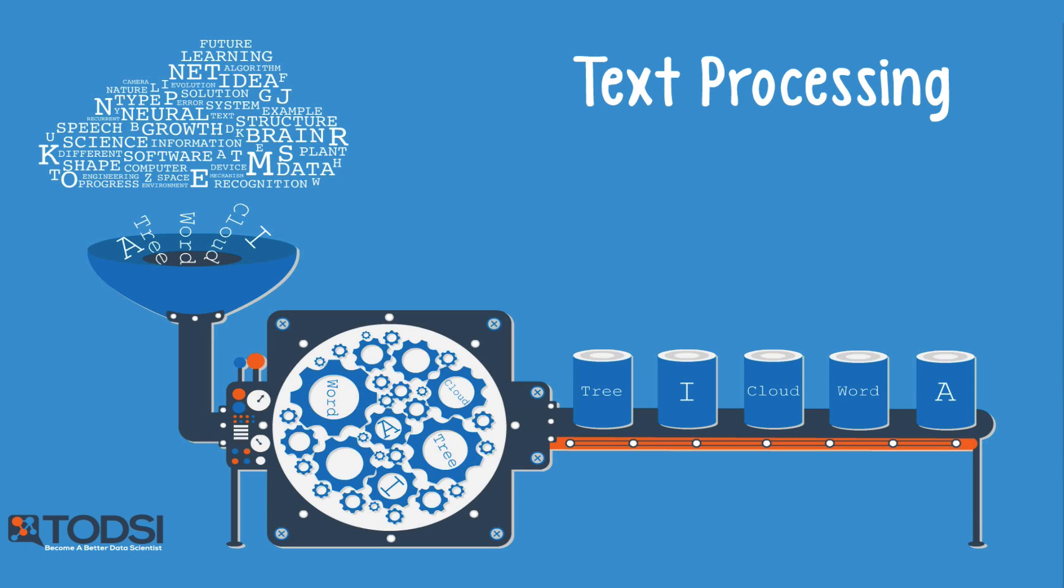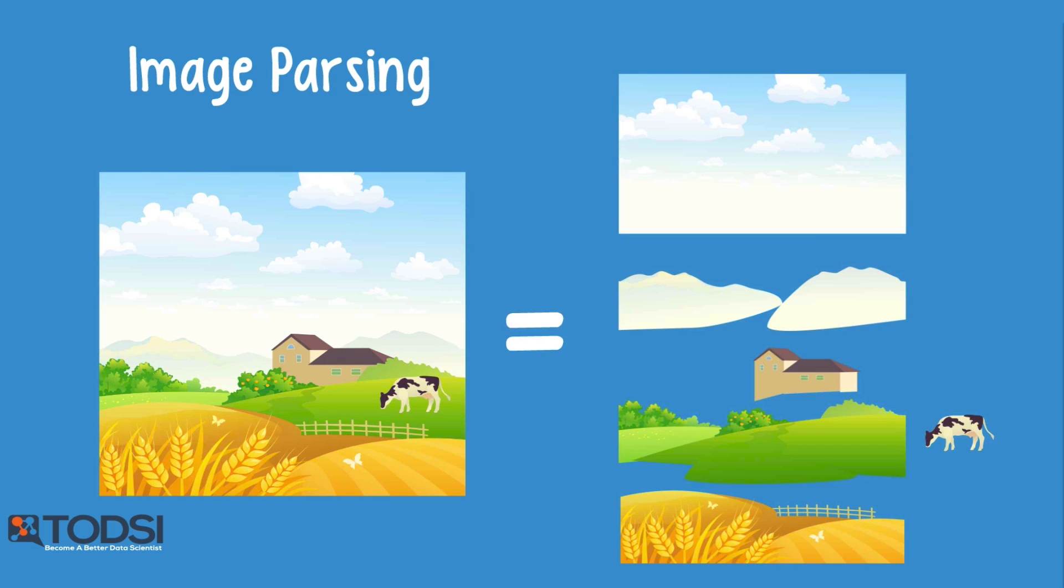RNTNs are used in natural language processing for both syntactic parsing and sentiment analysis. They are also used to parse images, typically when an image contains a scene with many different components.